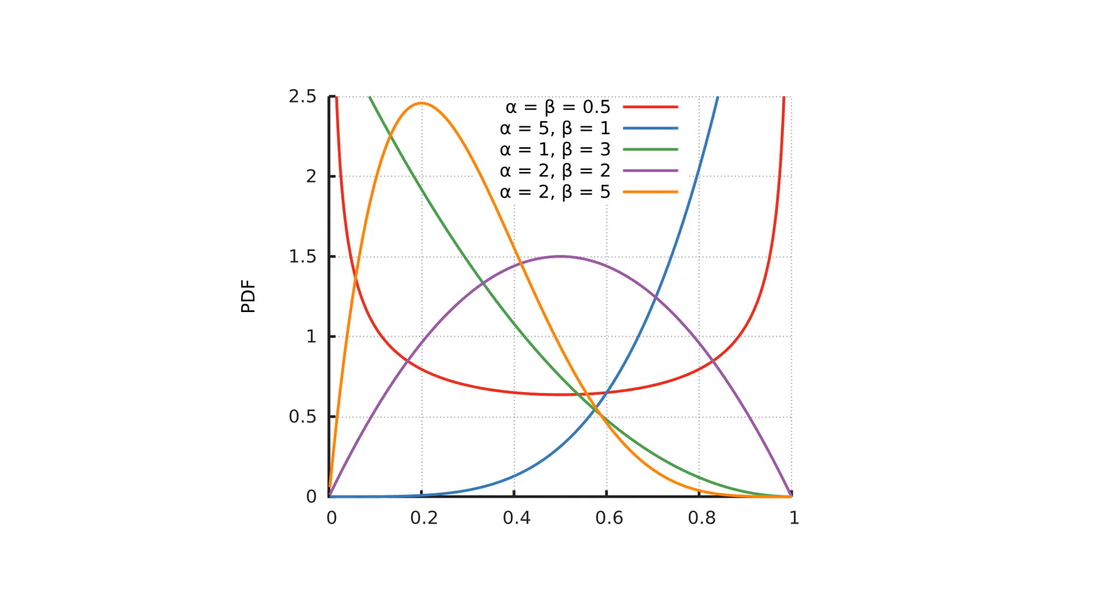The probability density function of a beta random variable can take many different forms, depending on the values of the two parameters alpha and beta, as shown in this figure.